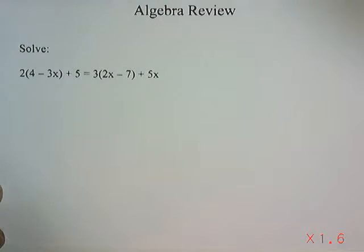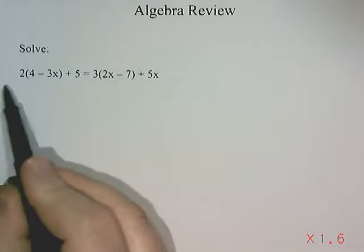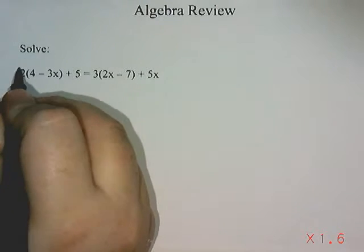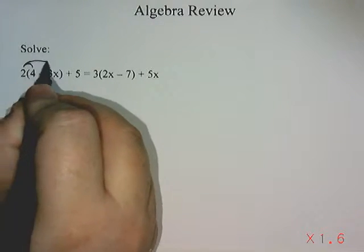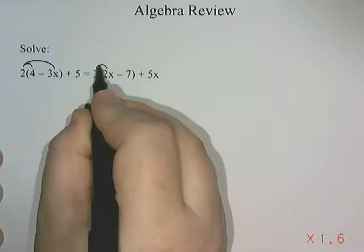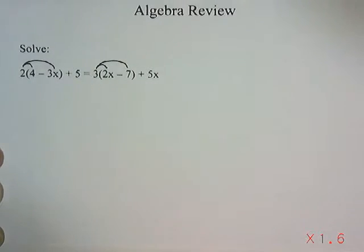One of the things I noticed is that there are quite a few brackets here. So the first thing I'm going to do is expand out any brackets that I have. I'm going to take that 2 and multiply it into the first bracket, and I'm going to take this 3 and multiply it into the second bracket.